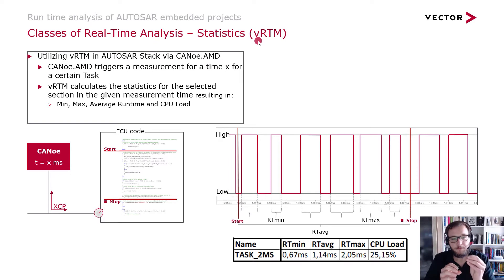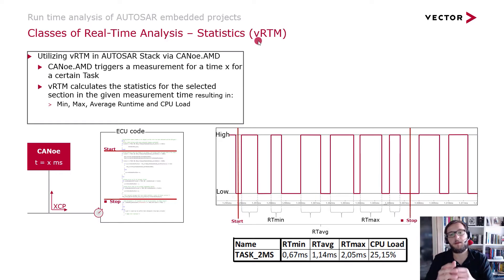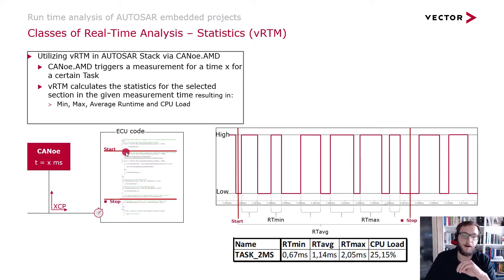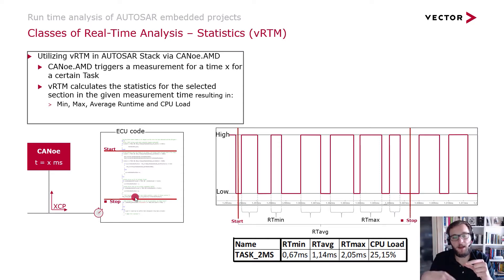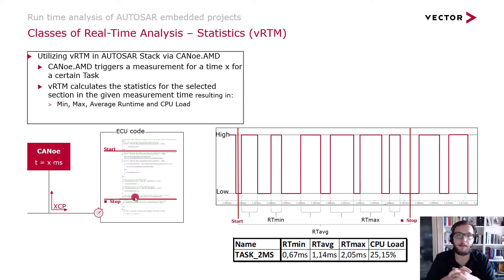Basically, with CANoe AMD you're triggering a measurement for a certain period of time — five milliseconds for example — and then you have a start and a stop point in your code. You will then be able to measure how long this part was executed within the measurement period. The VRTM automatically collects this data and after the end of the measurement period provides the minimum, maximum and average runtime as well as the CPU load.